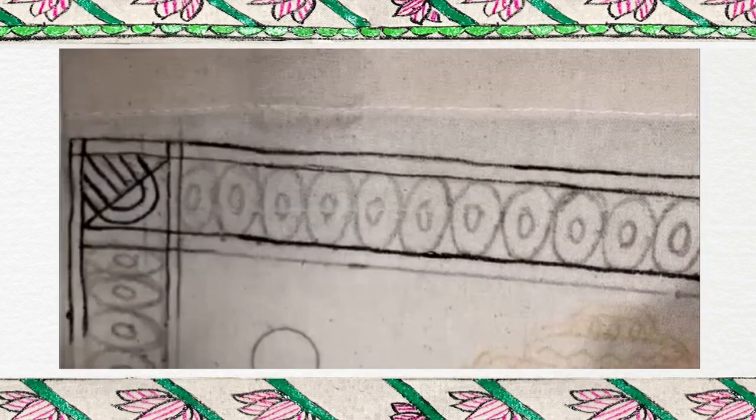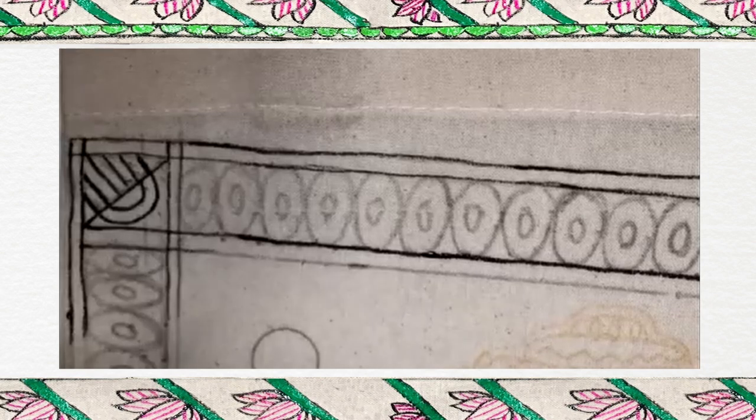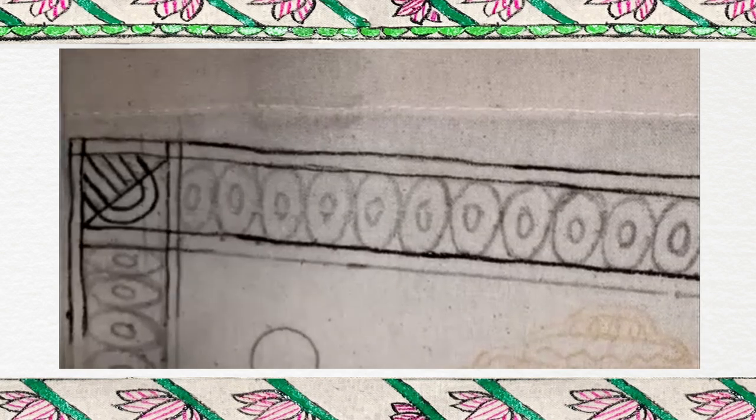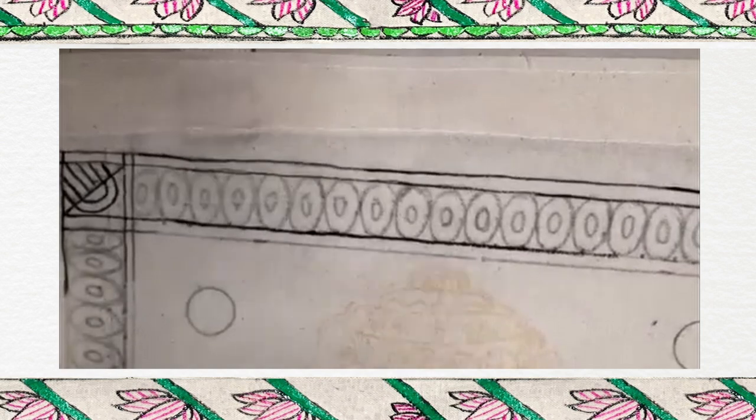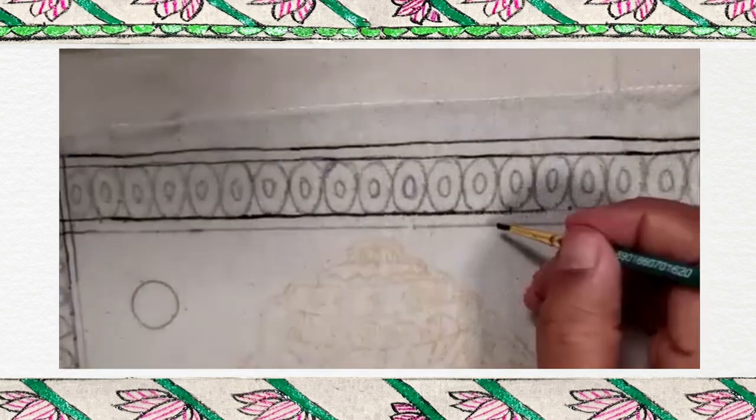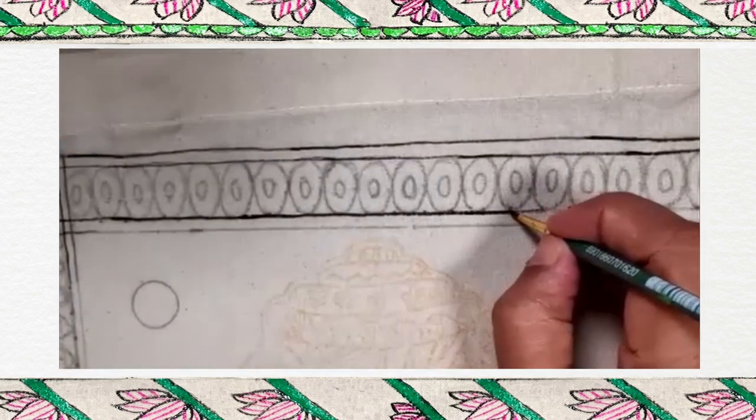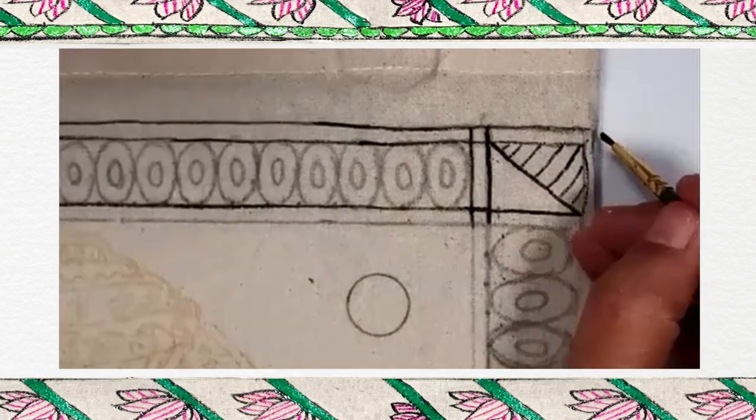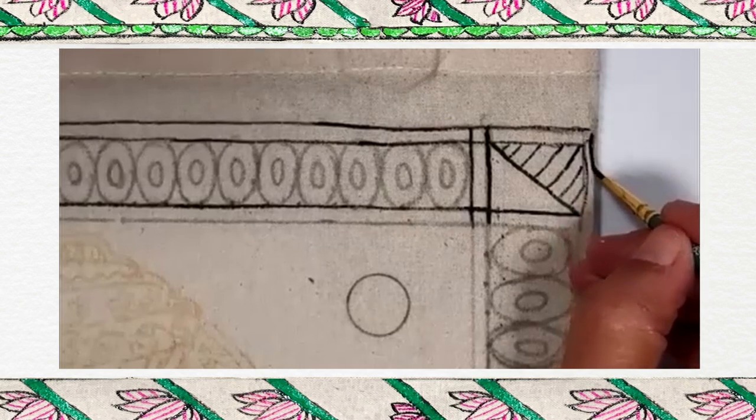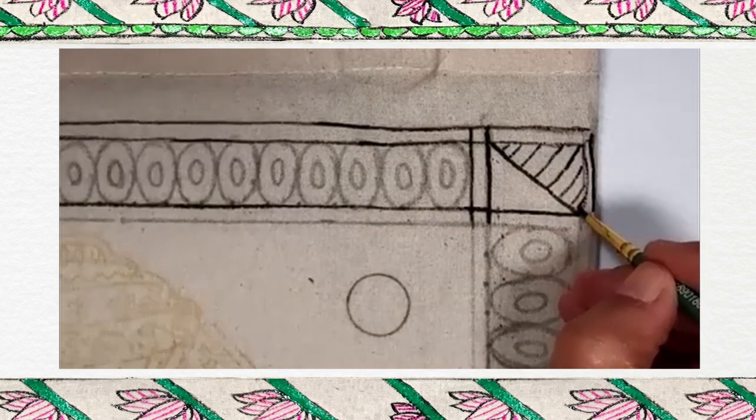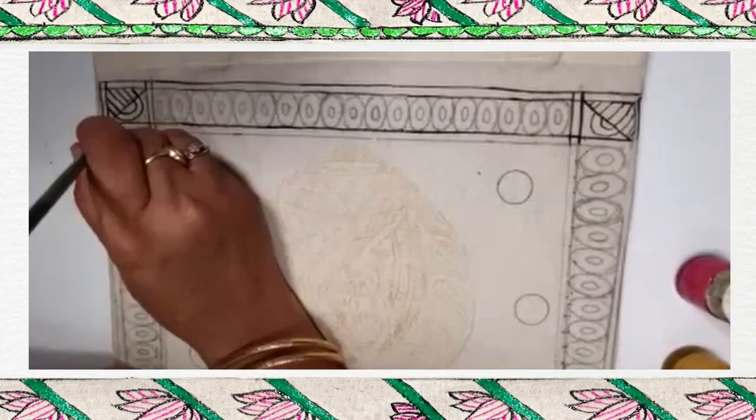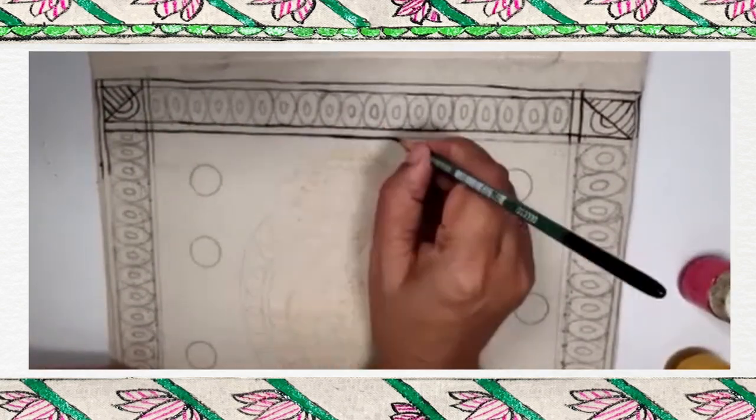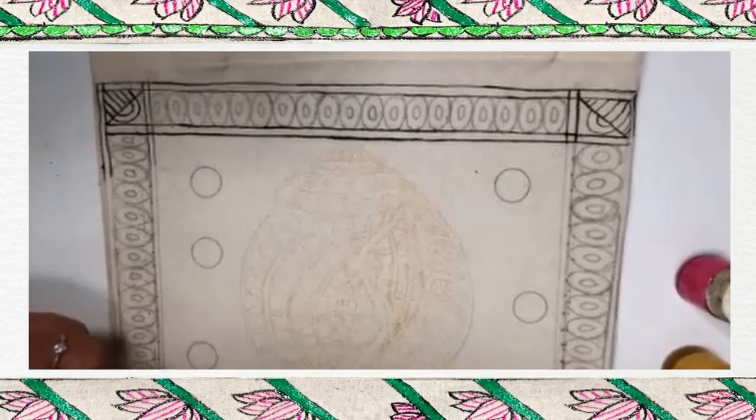I have marked 11 cm on the home outline so that my design is same size. Double line is mandatory. We have to draw double line. Our double line is ready.